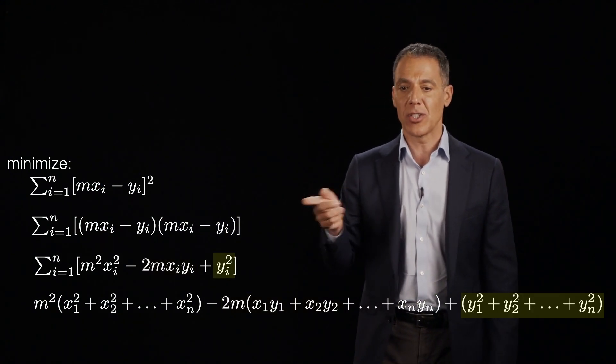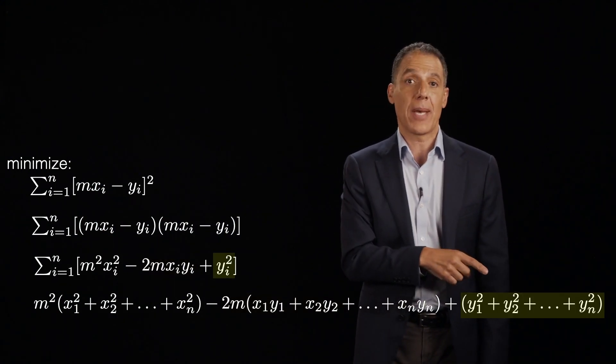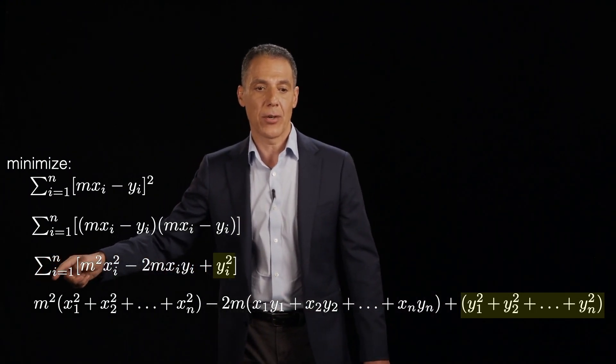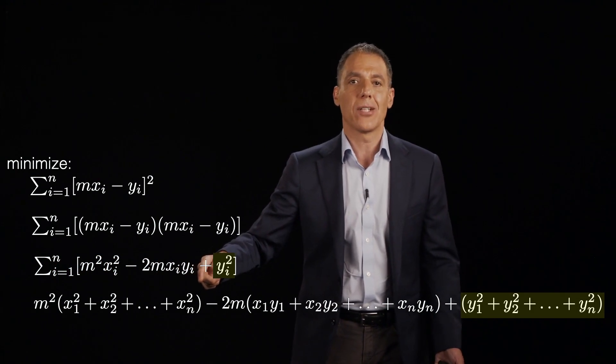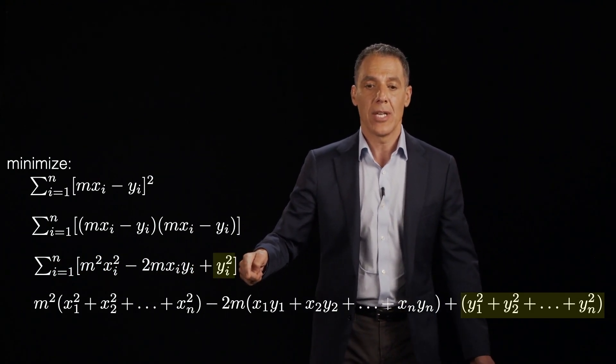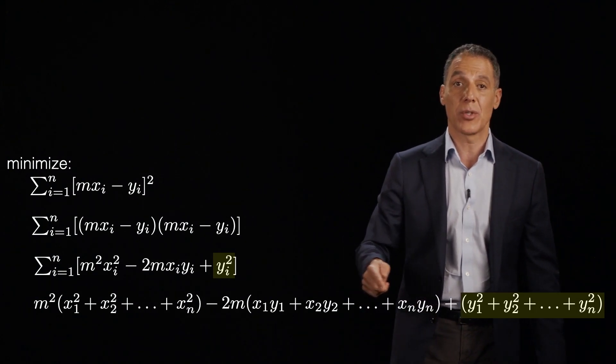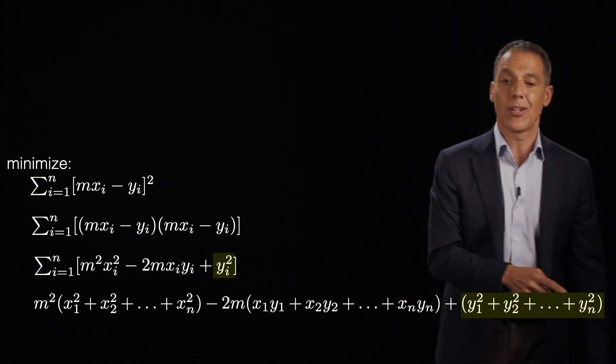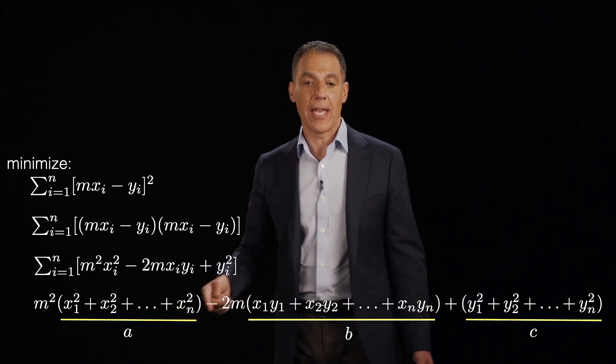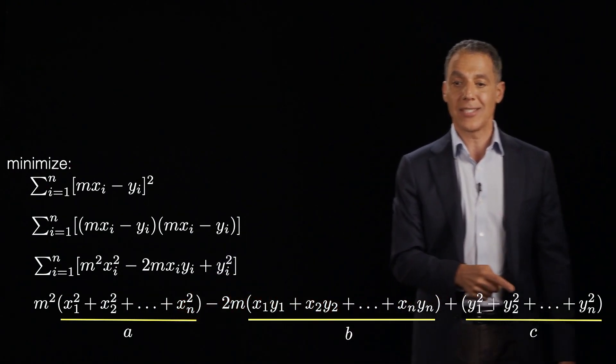And then of course the last term is just the sum of all the y squared and doesn't depend on m at all. So here's my unknown m, m squared right there, times, well, just some number, right? The sum of the squares of all the x components. Here's minus 2m, my unknown, times x1y1 plus the sum of the squares of all the x and the y components, plus another constant over here. Allow me, if you will, to call this thing a, this thing b, and this thing c.